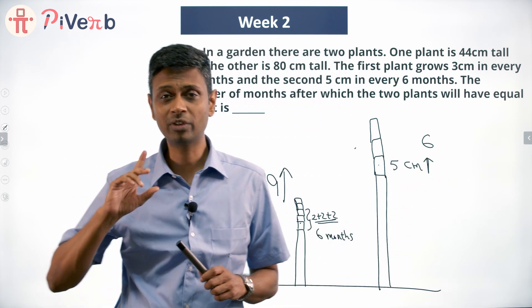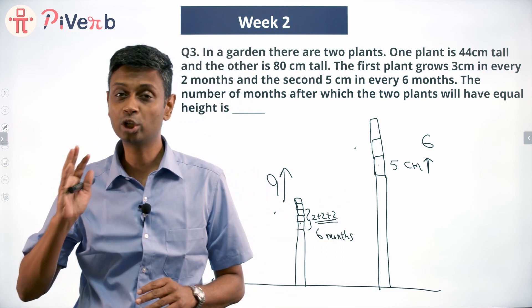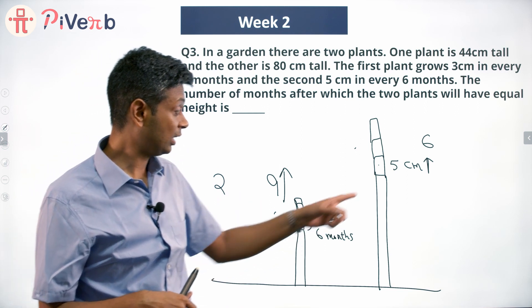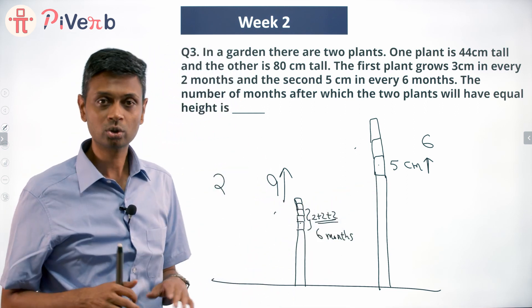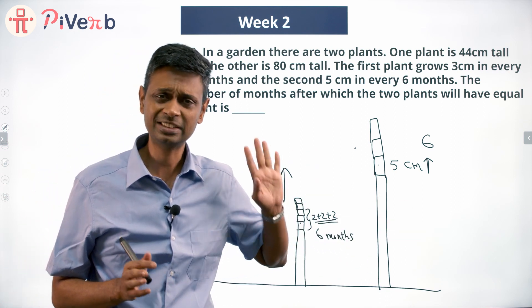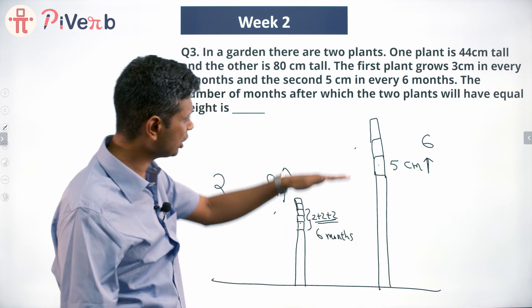The first thing we've done is say what happens in equal units of time. In a 6 month duration, this grows by 9, that grows only by 5. Brilliant. This is growing faster so this will catch up with that.